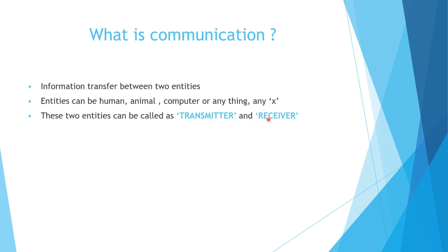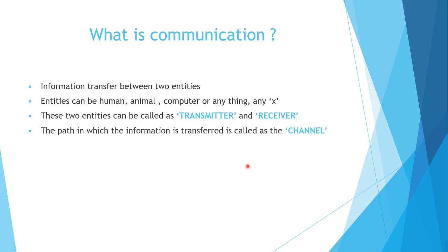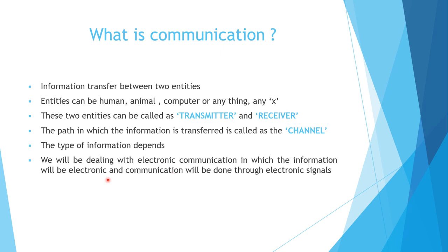The transmitter and receiver can be wired or wireless, analog or digital. The path of information transfer is called the channel. In the channel there will be some noise which degrades the message transmitted from transmitter to receiver. The type of information can be speech, music, or any type. Here we deal with electronic communication, where information is electronic and transmitted through electronic signals.